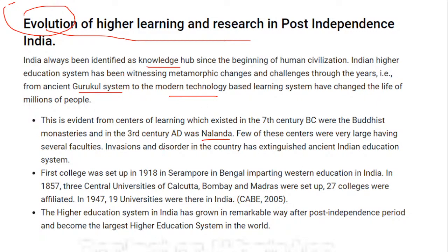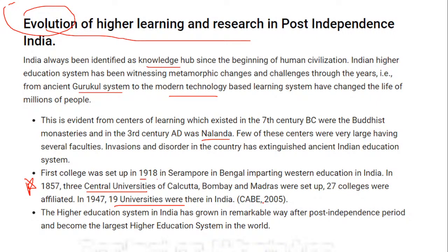Moving to the next phase: the first college was set up in Bengal in 1818, imparting western education. In the 18th century — specifically 1857 — three central universities were established. This question appears frequently: which three universities were established in 1857? The answer is Calcutta, Bombay, and Madras. Delhi is often given as the odd man out, so remember that Delhi was not among them.